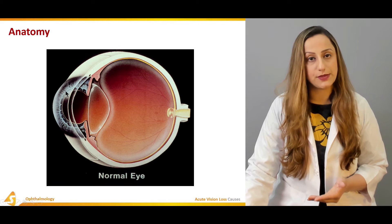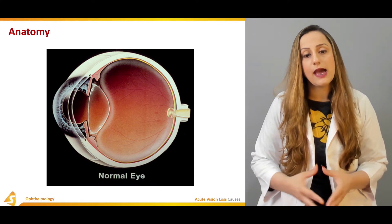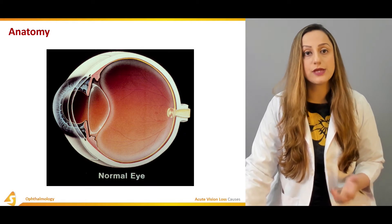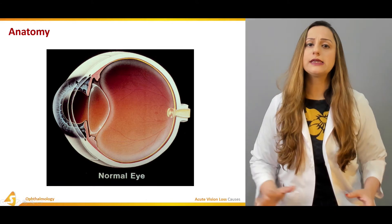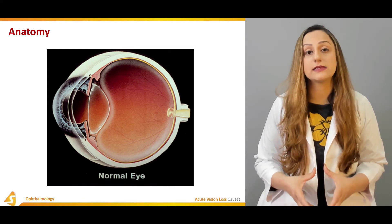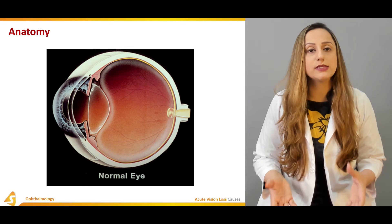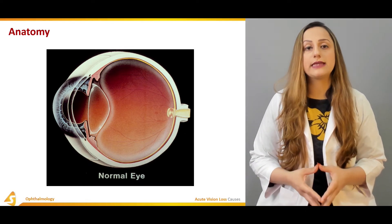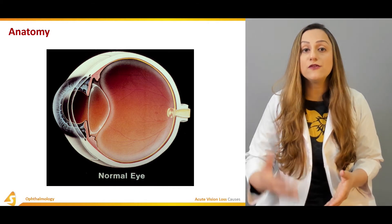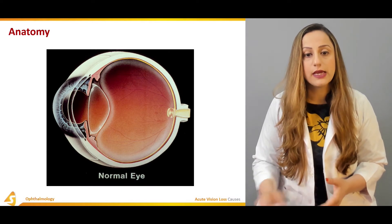Moving on to the anterior chamber — it can contribute to acute vision loss. In the anterior chamber, we can have uveitis, which is basically an inflammatory condition. We can also have angle closure glaucoma. The distinguishing feature of glaucoma from other retinal diseases or optic neuritis is pain. Glaucoma is characterized by increased intraocular pressure, and if vision loss is sudden and painful, this points toward angle closure glaucoma.